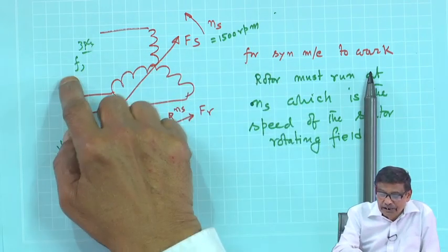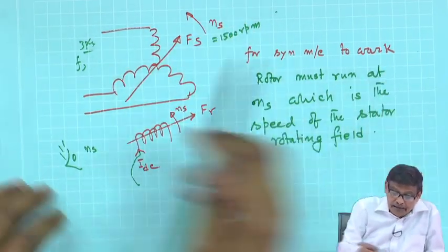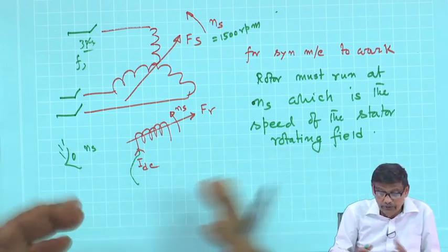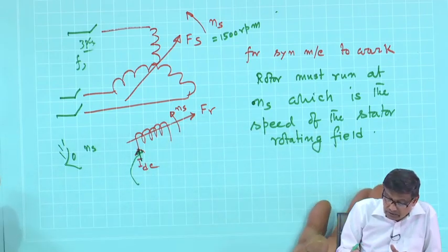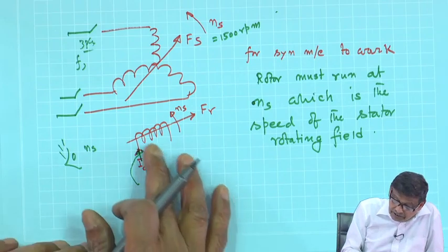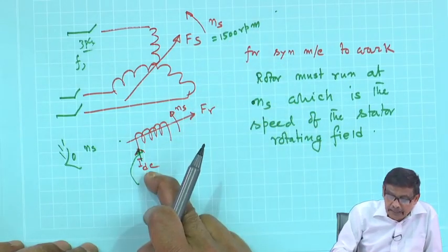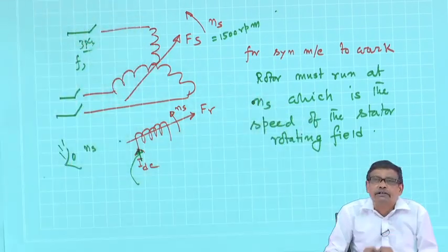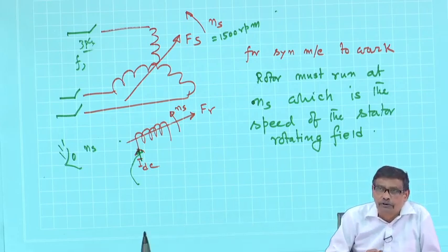Suppose it is a 4-pole machine with a 50 Hz supply — the stator field runs at 1500 RPM. I will excite the DC field, then use an external agency to bring the rotor speed up to 1500 RPM. Then I excite the field and close the switch — the machine runs fine, torque is produced which balances the load torque. These things can be easily understood without any mathematics.